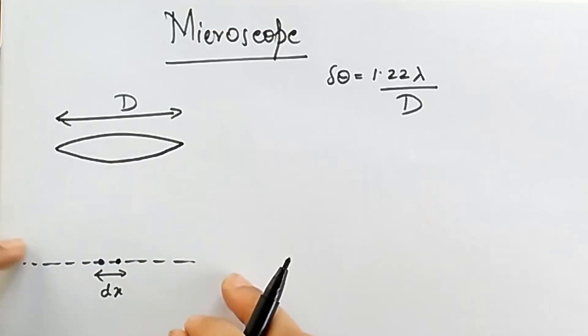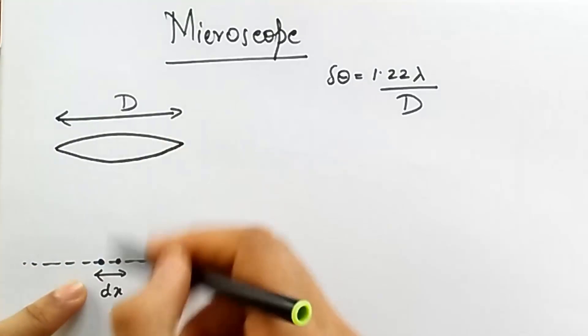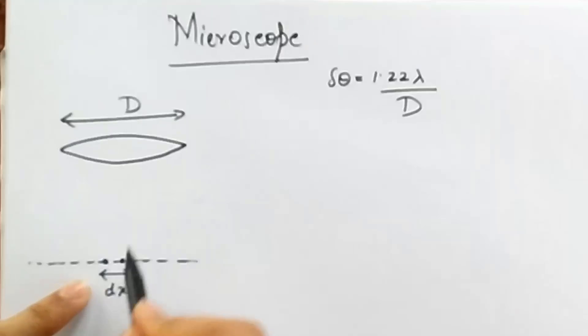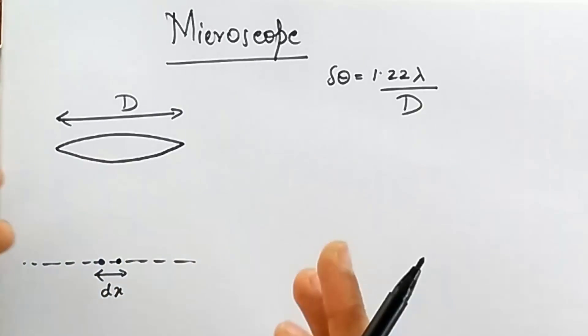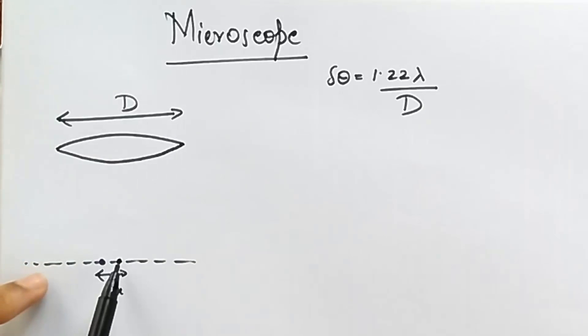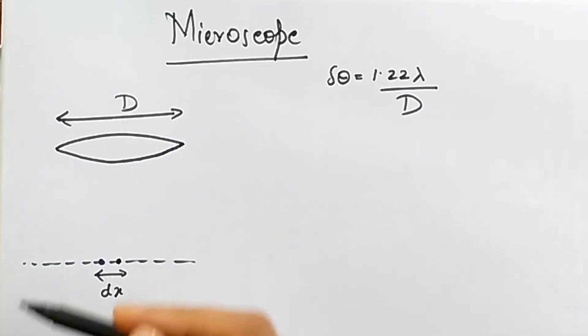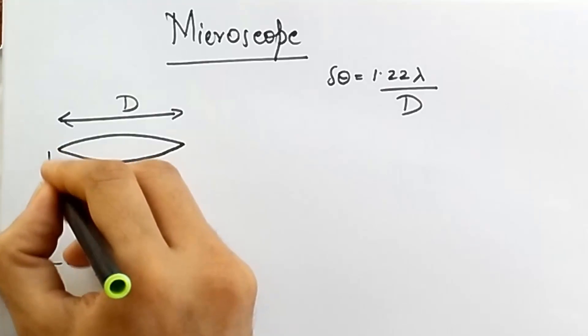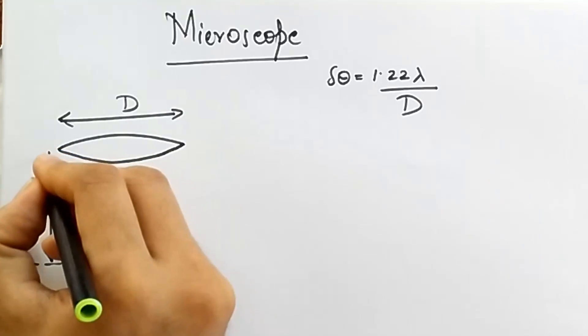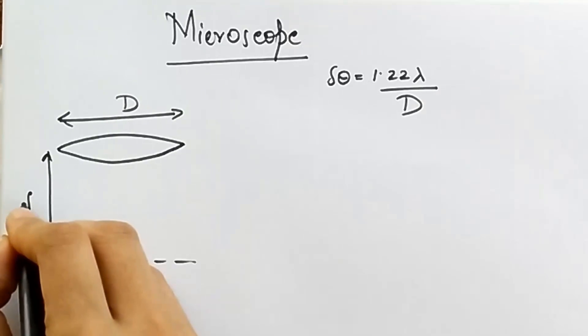To do that, we're going to make some assumptions. The first assumption we're going to make is that the specimen is right at the focal length, or right at the principal focus of this objective. That's not a bad assumption. Whenever we have a microscope, the specimen is very very close to the principal focus. So I can say that this distance is going to be the focal length of the objective.